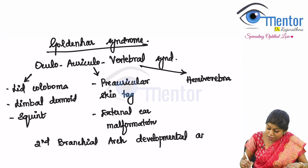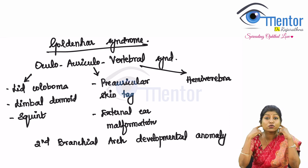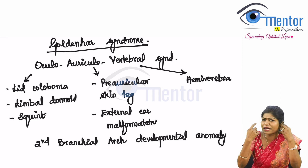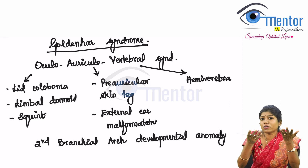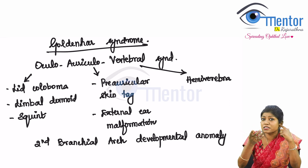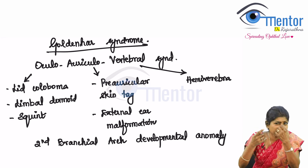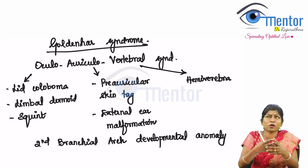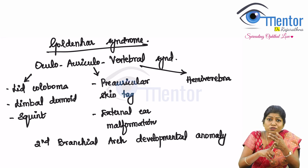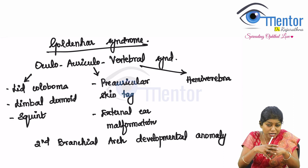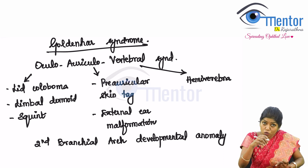Whenever you see a case of limbal dermoid, you need to get an ENT consult, because while we can see the preauricular skin tags, we cannot really see into the external ear canal. Also get an X-ray spine and send for an orthopaedic consult. This is Goldenhar syndrome.